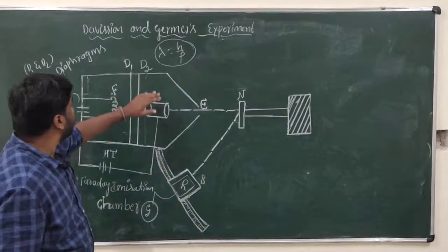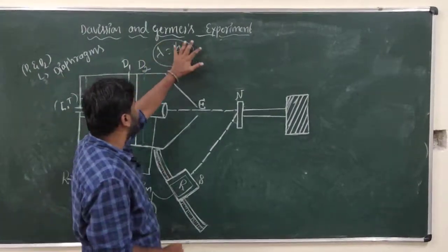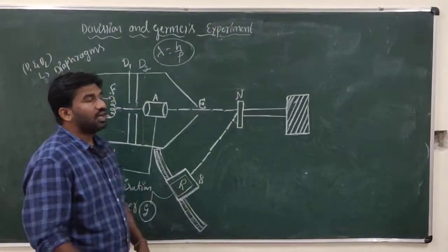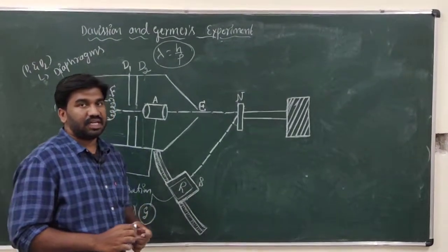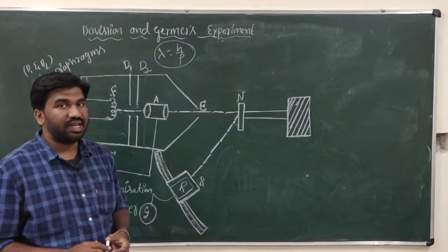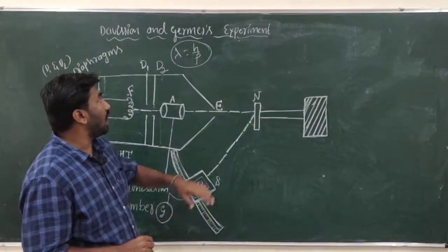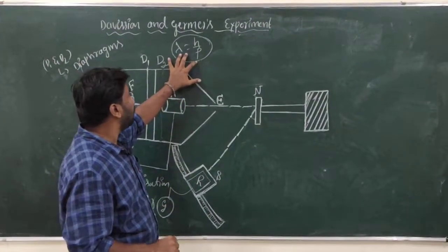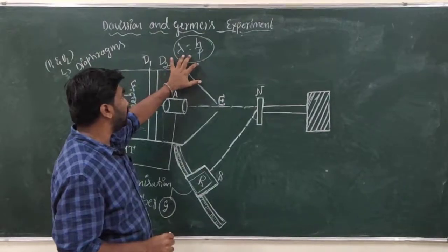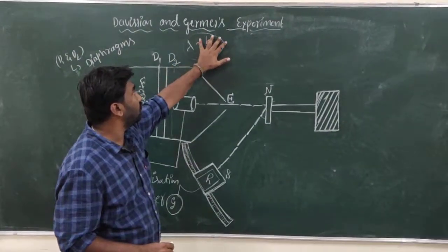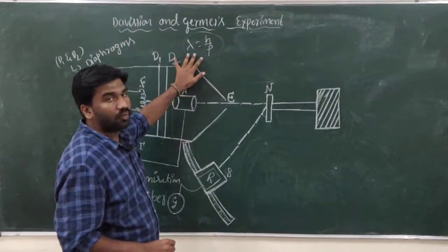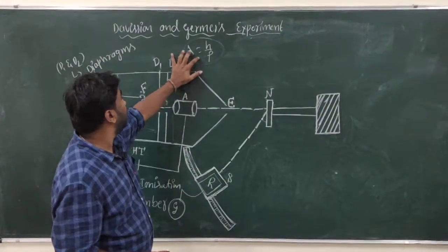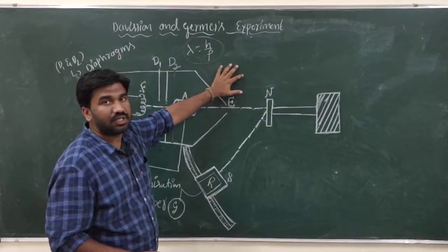In this video, I am going to discuss the Davisson and Germer experiment. De Broglie in 1924 first predicted the wave nature of an electron and gave the expression lambda is equal to h by p. This expression helps to calculate the wavelength of a matter wave, and this was experimentally verified by the Davisson and Germer experiment.